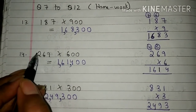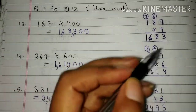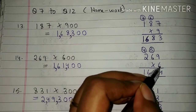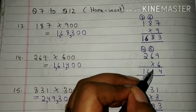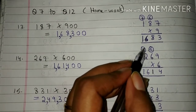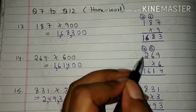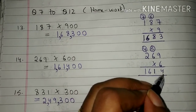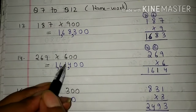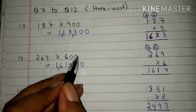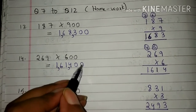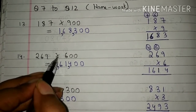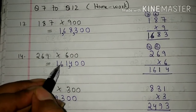And students, here 0 is written 2 times, that is 0 0. So we will write 0 two times here also. Now students, 187 multiplied by 900 will give 168,300. 14th question: 269 into 600. Students, first we will multiply 269 by 6. So 6 into 9 is 54. 4 we have written here and 5 will be carried. 6 into 6 is 36 plus 5 is 41. 1 we have written here and 4 will be carried. 6 into 2 is 12 plus 4 is 16. Students, 269 multiplied by 6 will give 1,614. So students, we will write 1,614 here, and here 0 is written 2 times. So we will write 0 two times here also. Now students, 269 multiplied by 600 will give 161,400.